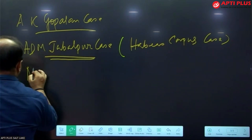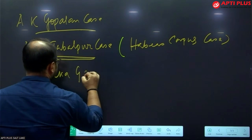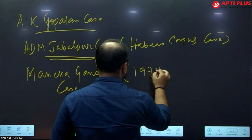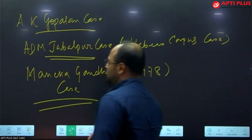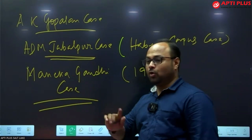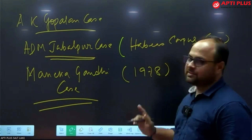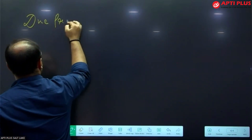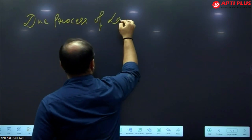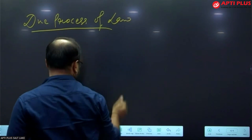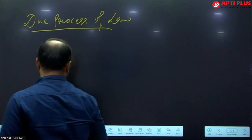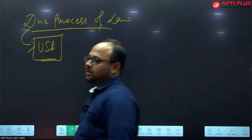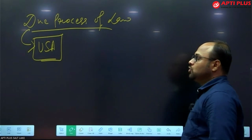The famous Maneka Gandhi case of 1978 was a turning point. From this case onwards, the Supreme Court broadened the scope of procedure established by law and included the concept of due process of law. Due process of law is a concept taken from the USA.